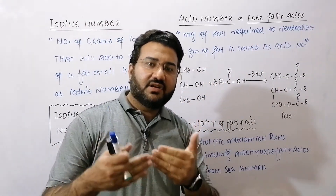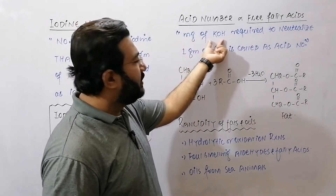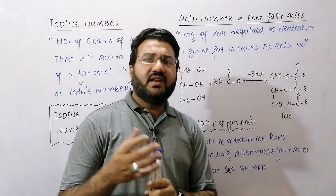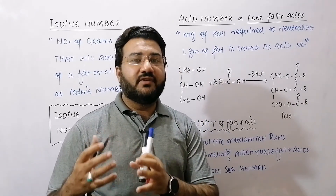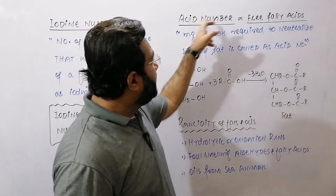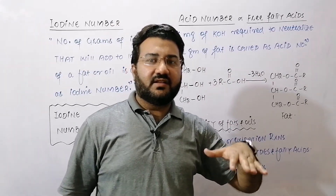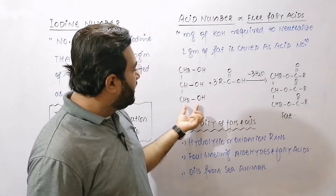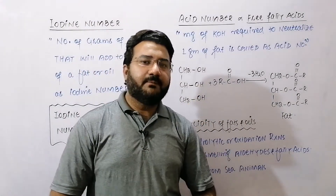Acid number is the milligrams of KOH which are required to neutralize 1 gram of a fat. If a fat has a large amount of free fatty acids, then many milligrams of KOH will be required to neutralize that fat. But if a fat has very little free fatty acids, then very little KOH will be required. So the acid number is directly proportional to the amount of free fatty acids present in the fat or oil — those fatty acids that did not get esterified with the glycerol and remain in free form.